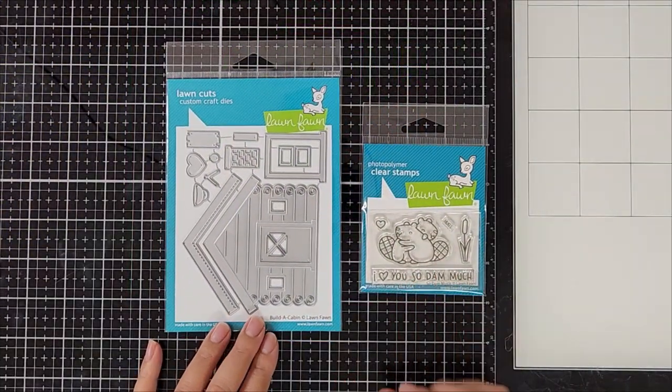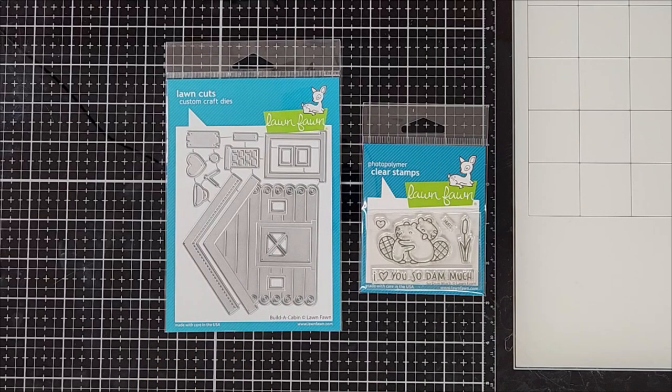Okay, so here is a look at the two products that I will be showcasing today. The first one here is from Lawn Fawn and it's called Build a Cabin, and the second one is also from Lawn Fawn and it's a smaller stamp set called So Dam Much.